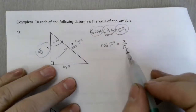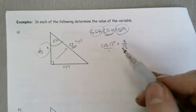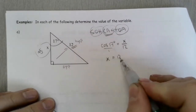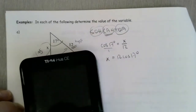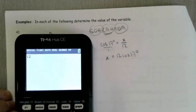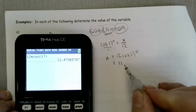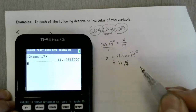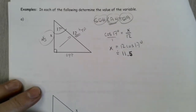Because the unknown is in the numerator, I can just multiply that up — it's like cross-multiplication. 1 times X is X, and then I have 12 times the cosine of 17. Evaluating that: 12 multiplied by cosine of 17 gives X approximately equal to 11.5. No units were given, so I leave it as 11.5.